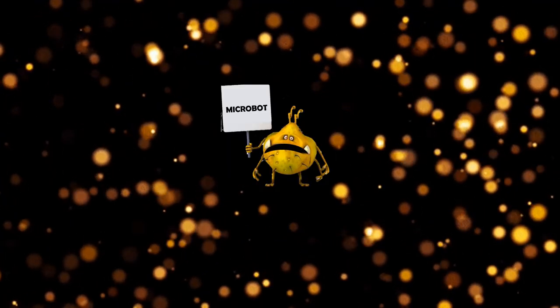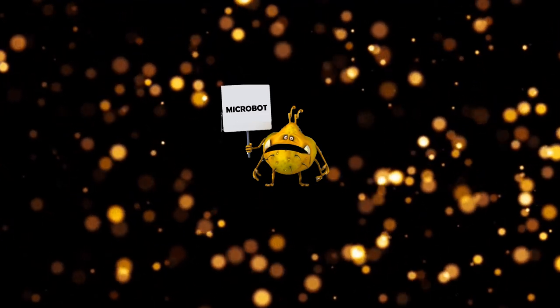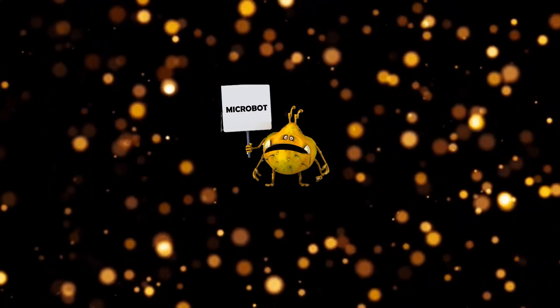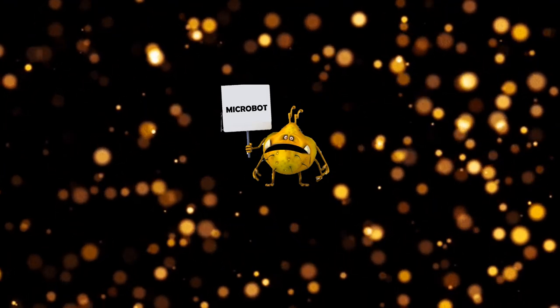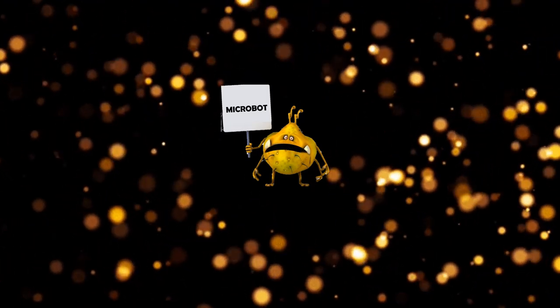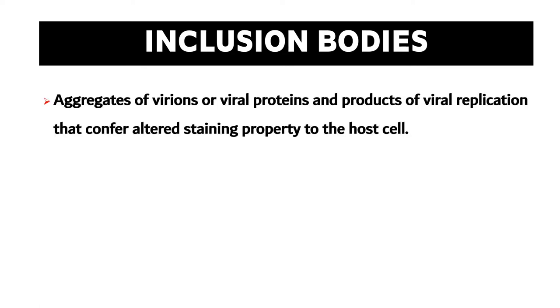Hello dear viewers, welcome back to this channel. I'm your guide Micro Bot. In today's video we are going to look at few mnemonics to remember viral inclusion bodies. Viral inclusion bodies are very confusing to understand and memorize, so I'm going to make your job very easy. By definition, inclusion bodies — specifically viral inclusion bodies — are aggregates of virions or viral proteins and products of viral replication that confer altered staining property to the host cell.